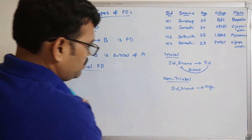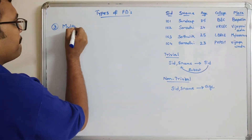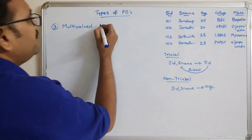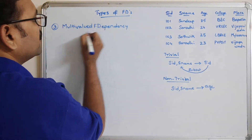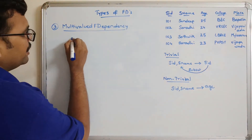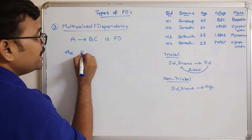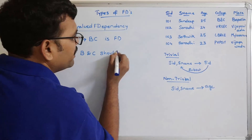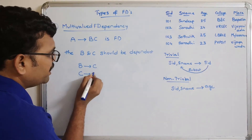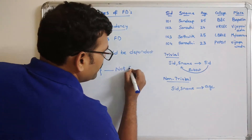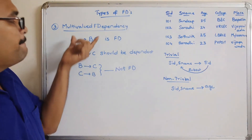The third type is multi-valued functional dependency. If A tends to BC is functionally dependent, then B and C should not be dependent on each other — that means neither B tends to C nor C tends to B should be functionally dependent. Such a situation is called multi-valued functional dependency.